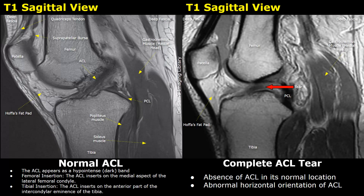Hello everyone, this is Dr. Sam. Today you will learn about ACL tears on MRI. The anterior cruciate ligament, or ACL, is an important ligament which helps in stabilizing the knee joint. MRI images, especially in sagittal planes, are very helpful in visualizing the ACL.